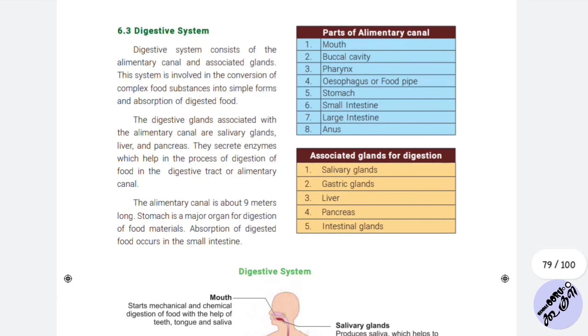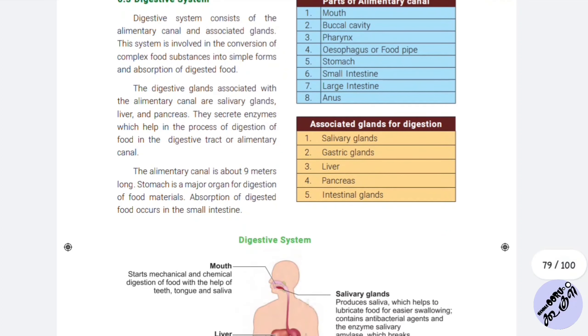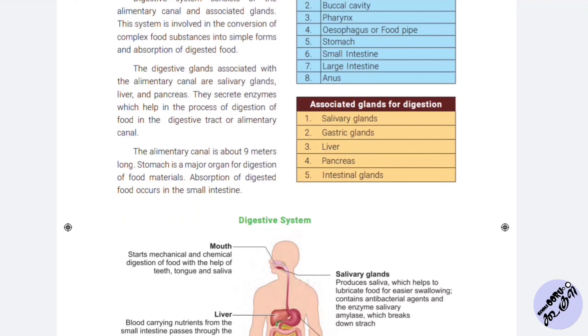And the absorption of digested food. The digestive glands associated with the alimentary canal are salivary glands, liver, and pancreas.